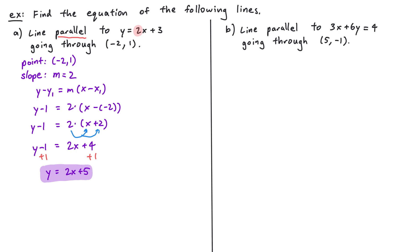In example b, we want to find the equation of a line parallel to 3x + 6y = 4 going through the point (5, -1). Again we need a point and a slope. The point is (5, -1). The slope is less obvious because 3x + 6y = 4 is not in slope-intercept form, so we need to rearrange it. Subtracting 3x from both sides gives 6y = -3x + 4.